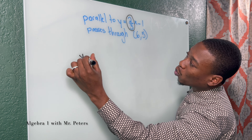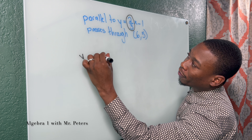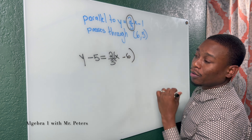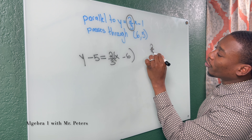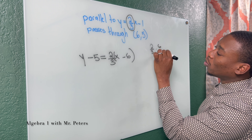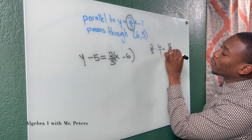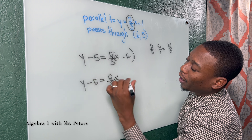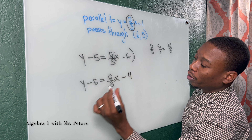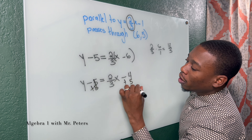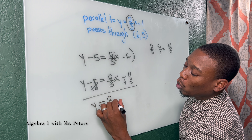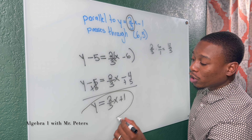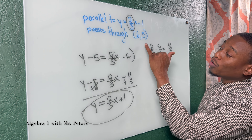So what we're going to have is Y minus five is equal to two over three, in parentheses, X minus six. Two over three times six over one is going to give us 12 over three, which is four. So we know Y minus five is equal to two over three X minus four. Add five on both sides — now we know Y is equal to two over three X plus one. This is going to be the equation of the parallel line that passes through the point (6, 5).